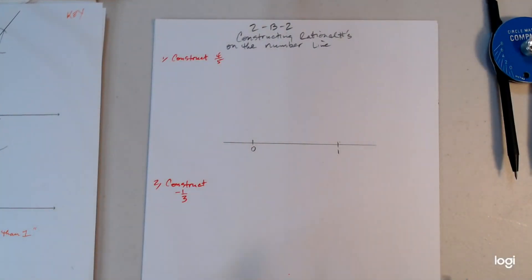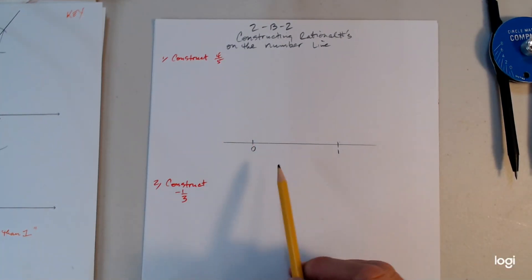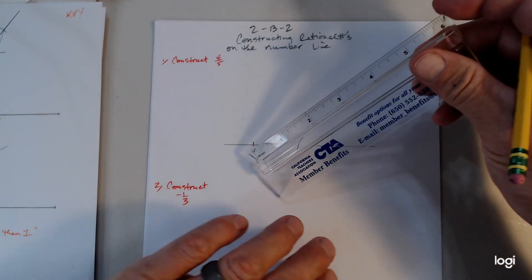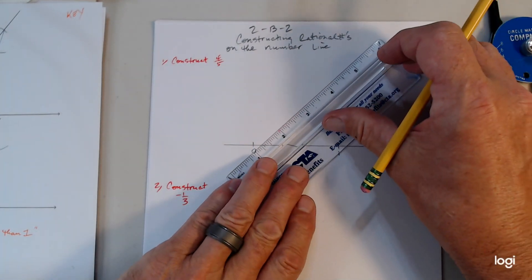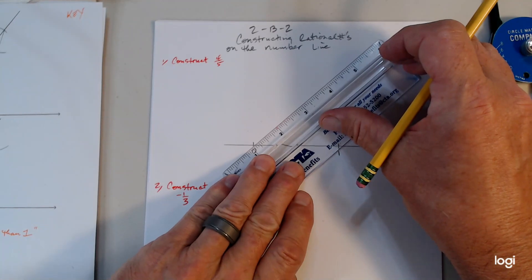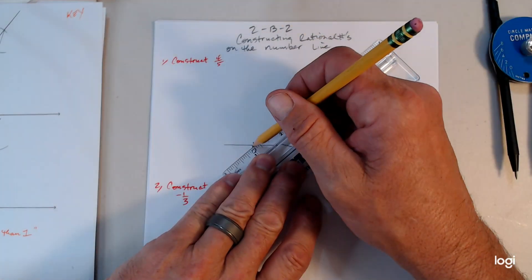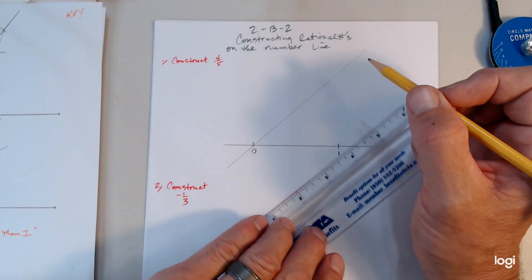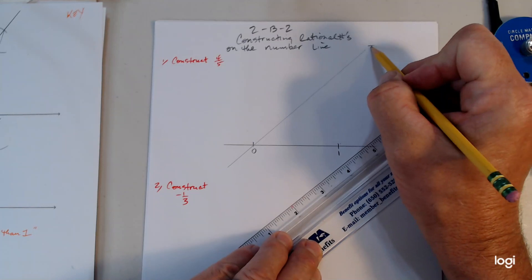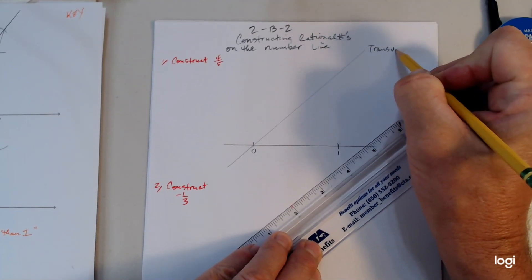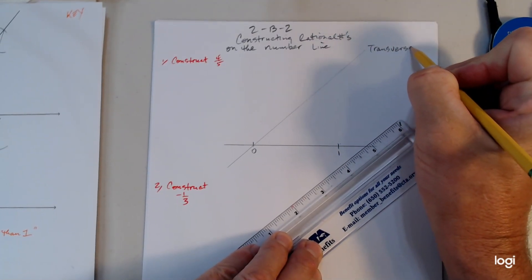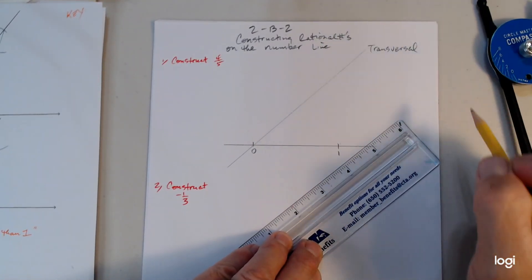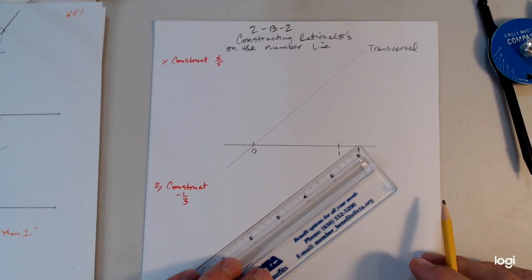So the very first thing is you draw a number line and label zero and one wherever you like. The second step is you get a straightedge and you construct what's called a transversal through zero — just an intersecting line that goes through zero.